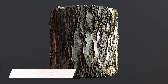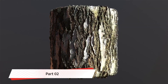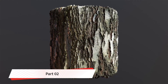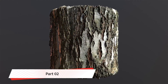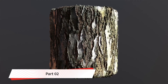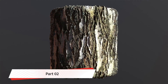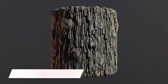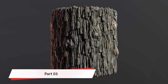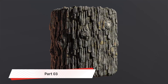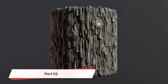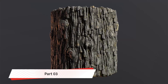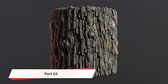In part two, we will kick it up a notch precision-wise and go through the process of preparing and processing a photogrammetry scan, going from a reconstructed mesh to a seamless texture. Part three will be a way deeper dive into actual procedural generation, where we'll be making a tree bark texture in Substance Designer completely from scratch.